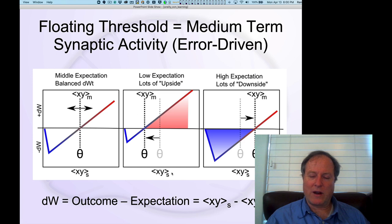Overall direction of change is driven by that level of calcium relative to this floating average value in the BCM kind of framework of thinking about this overall LTP-LTD curve.